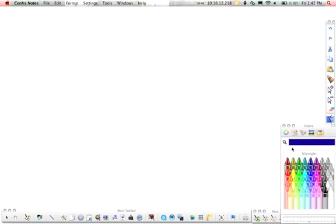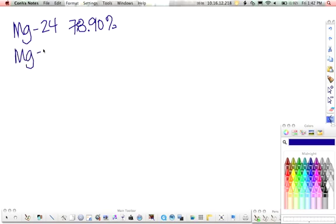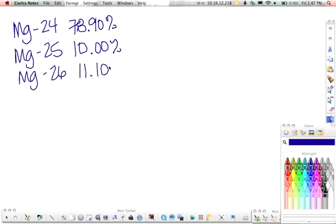And the first one is you have magnesium. Magnesium has three known isotopes. Magnesium-24 has a percent abundance of 78.9%. Magnesium-25 is 10%. And magnesium-26 is 11.1%. What is the average atomic mass of magnesium?